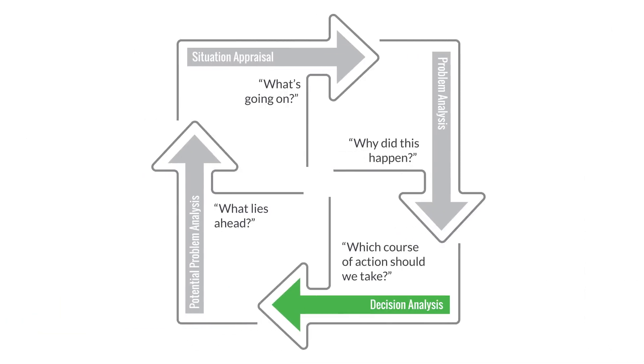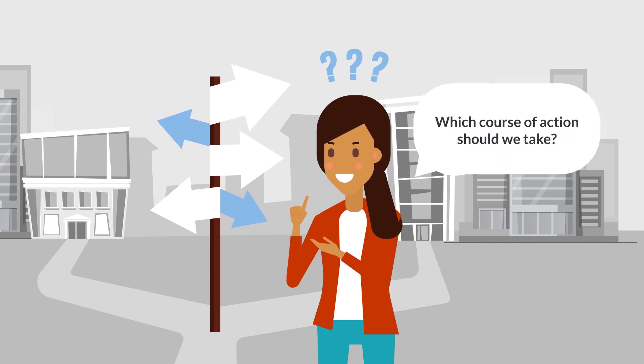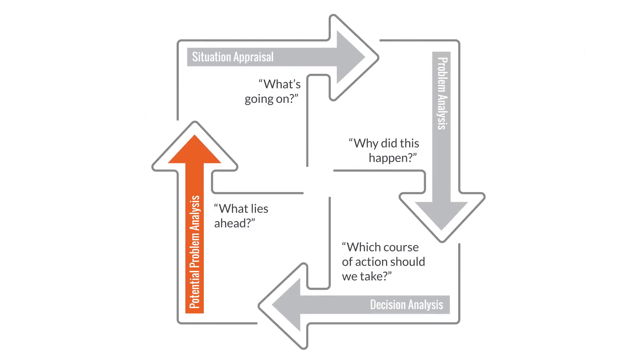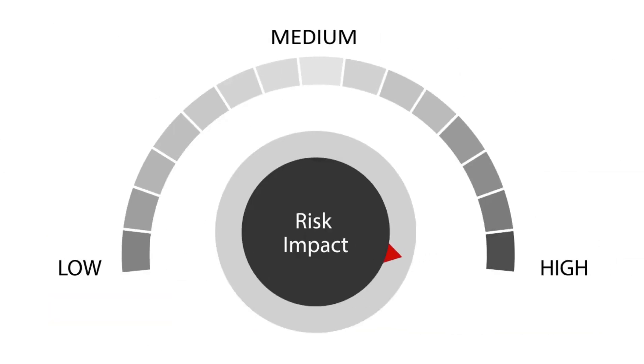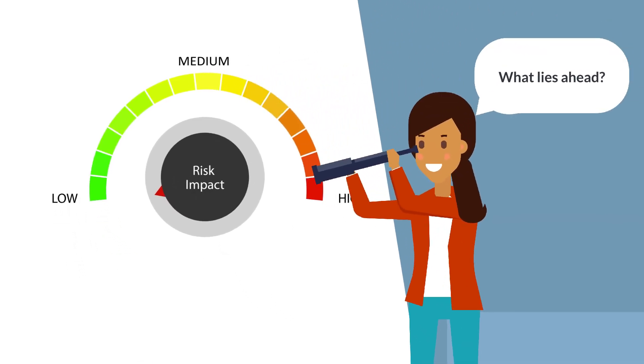If a choice needs to be made, a critical thinker will ask: which course of action should we take? And when thinking about what might happen, how to reduce the impact of a risk, or increase the likelihood of an opportunity, they'll ask: what lies ahead?